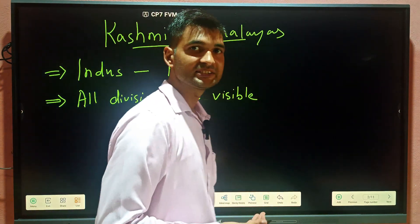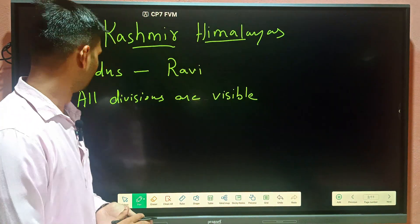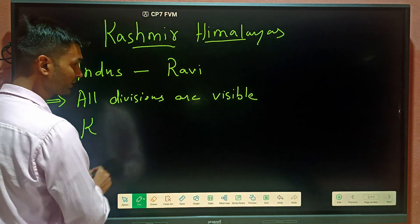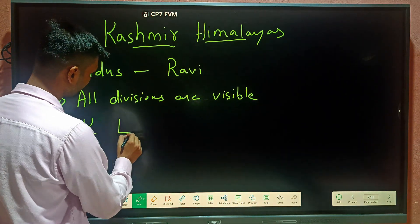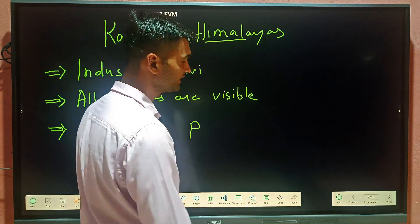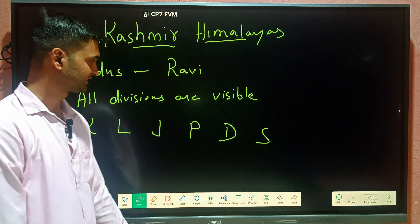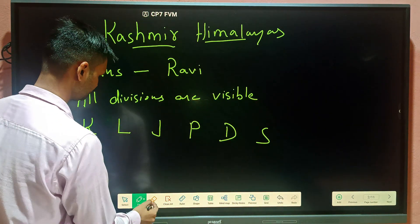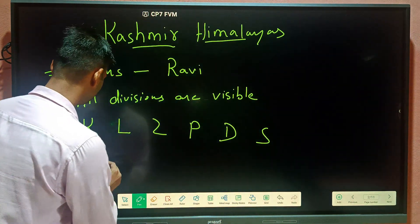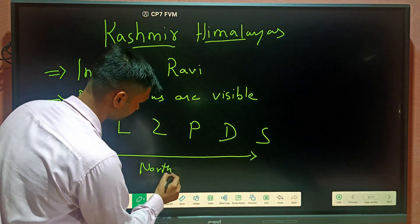In the Himalayas we can observe a series of parallel mountain ranges, and their sequence from north to south is: Karakoram, Ladakh, Zaskar, Pir Panjal, Dhauladhar, and Shivaliks.